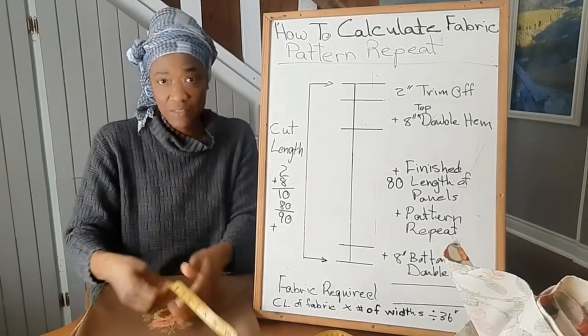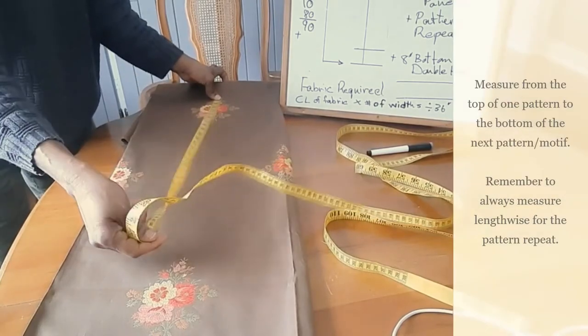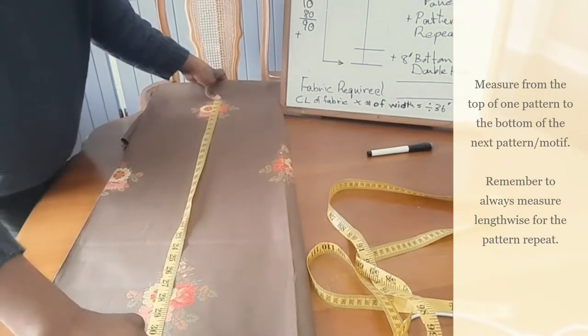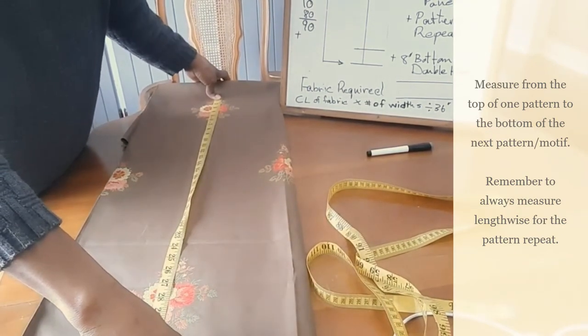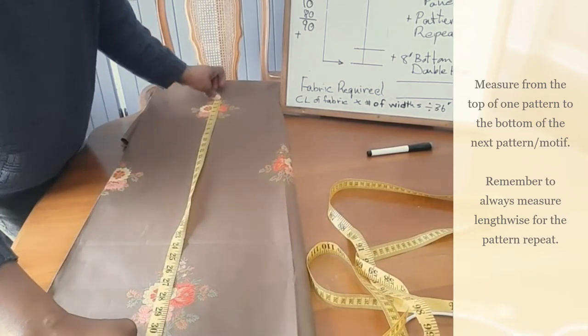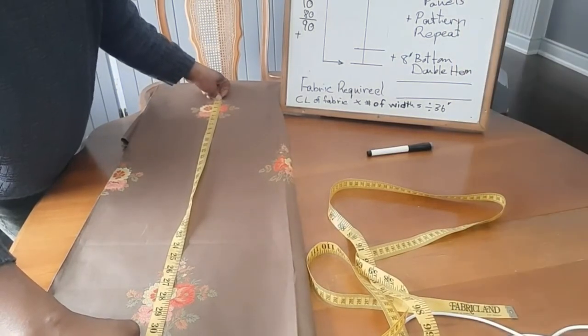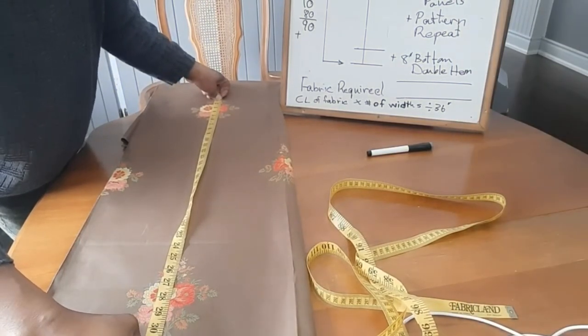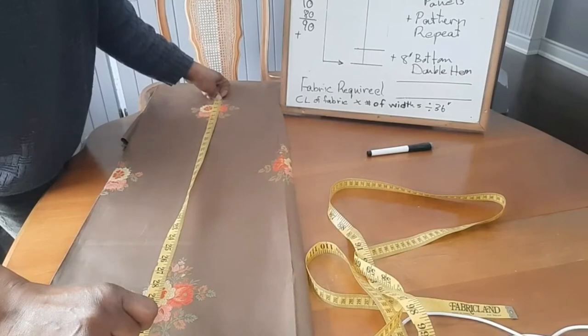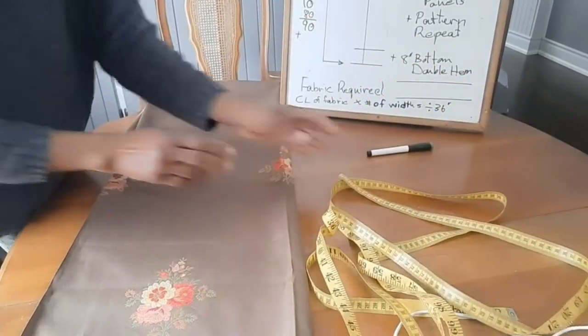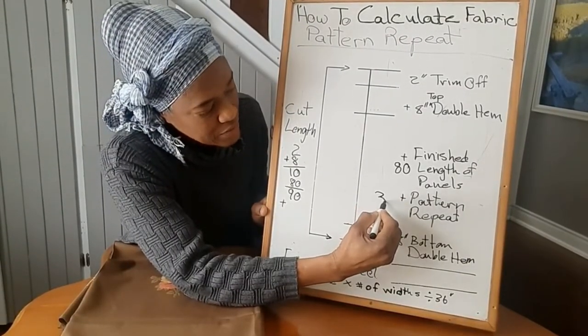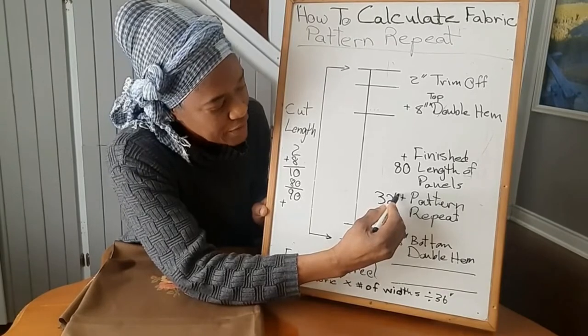And then we have pattern repeat here, but we're missing the number for the pattern repeat. So this is how we go ahead and measure for how many inches to add for your pattern repeat. You measure from the top of one pattern to the bottom of one pattern. Now we're doing this because in so doing, we are sure that we will have enough fabric to make sure our pattern matches up when we join panels.